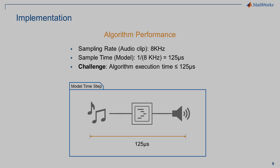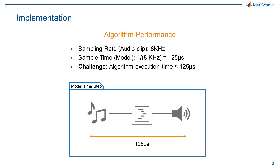Let's talk about the performance of these algorithms. The sampling rate of the sound clip is 8 kHz, meaning that in order to hear a meaningful audio effect, the algorithm needs to work within 125 microseconds — the inverse of 8 kHz. Failure to do so will lead to overrunning of the algorithms on the board and the audio effect will be undesirable. Both echo and reverb algorithms have been optimized such that the execution time at every time step is less than 125 microseconds.